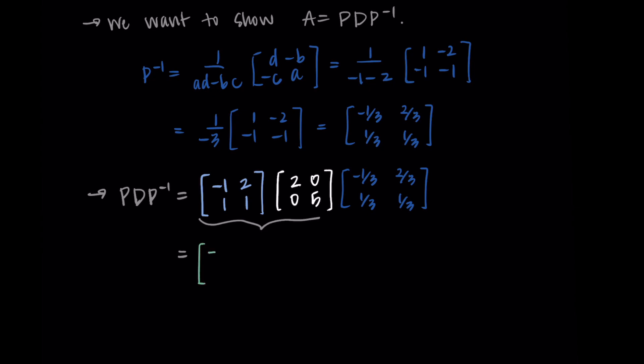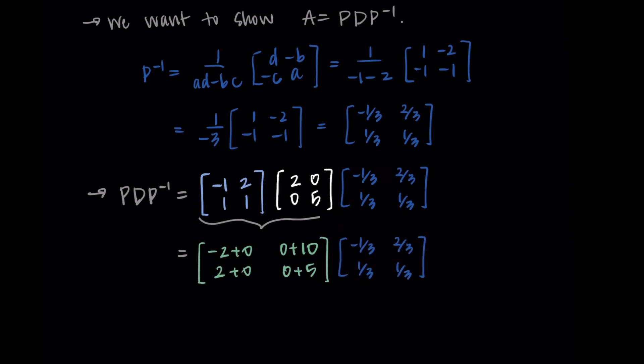I'm getting negative 2 plus 0 and 0 plus 10 in my first row, then 2 plus 0 and 0 plus 5 in my second row. Then I have P inverse here still. I'll just simplify before we keep going. I'm getting [-2, 10; 2, 5] for my first product. Now we're going to take this matrix and multiply it by P inverse.